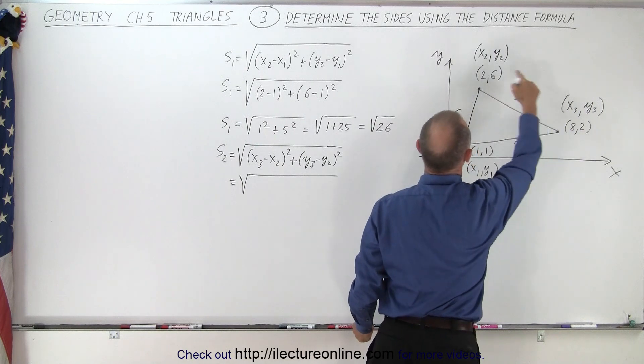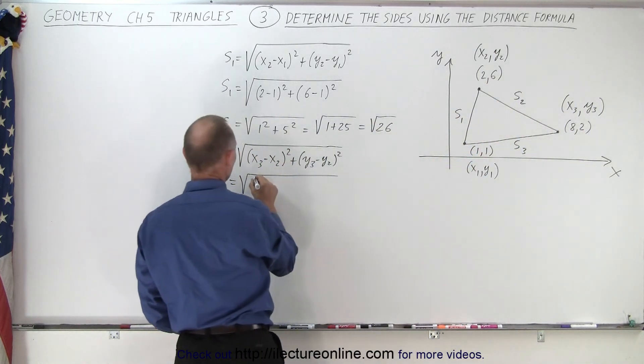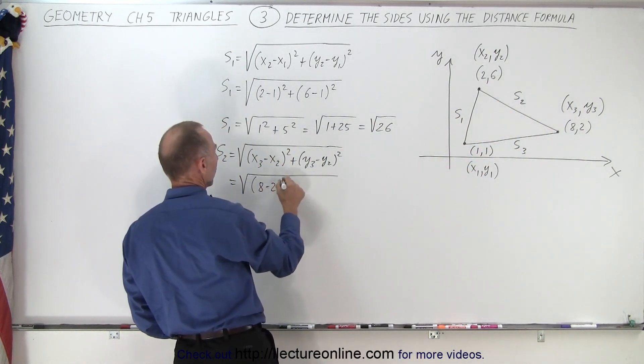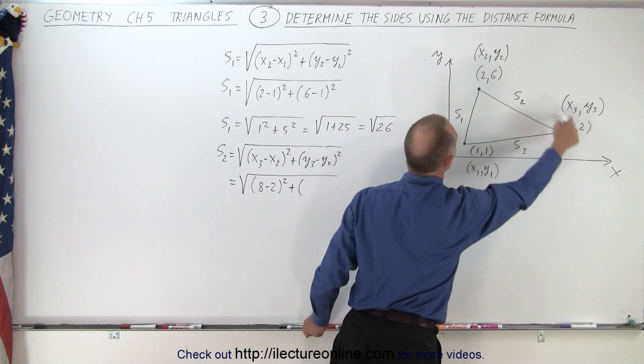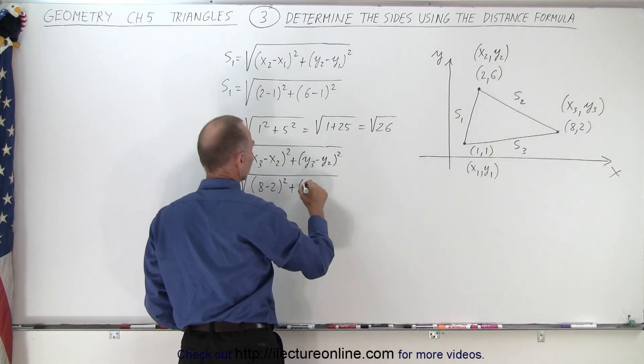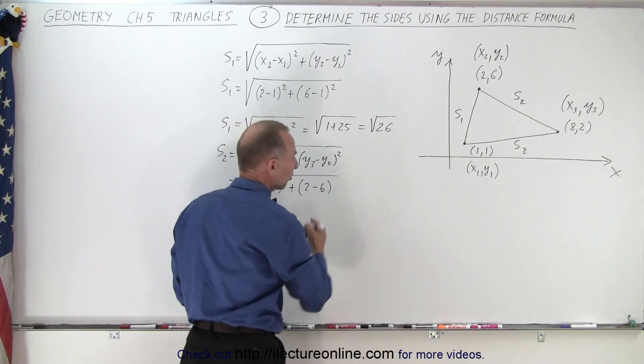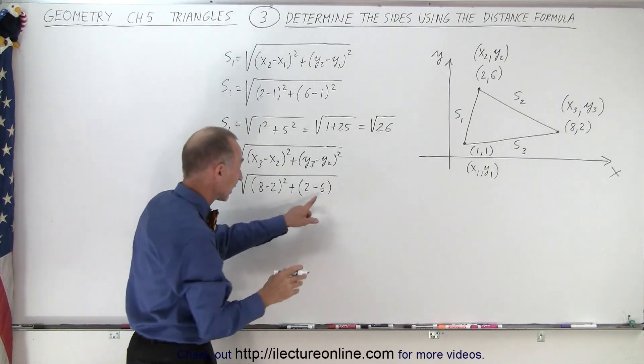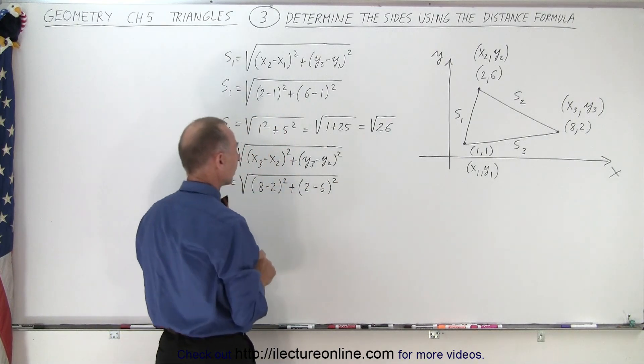That would be equal to the square root of—and again since we have them labeled, it's easy to find the values—x3 is 8, x2 is 2, so that would be (8 minus 2) squared plus y3 is 2 and y2 is 6, so (2 minus 6). Notice we don't really care if we get a negative value because we're going to square it.